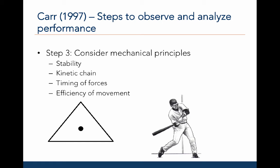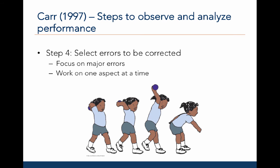The third step involves considering the mechanical principles of motion and stability. For example, is the person stable? Does he or she properly take advantage of the kinetic chain? Is the timing of the muscle forces or body segment motion optimal? Are the movements efficient? The fourth step involves selecting which errors should be corrected first. The key is to focus on the major errors first, then work on each aspect at a time before addressing subsequent errors.